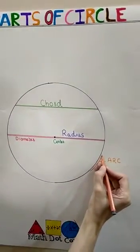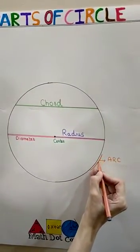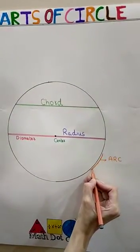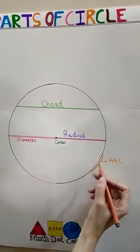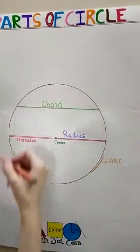This is the arc of the circle. The arc is basically a portion of the circumference of the circle.